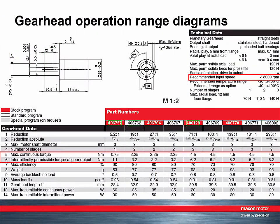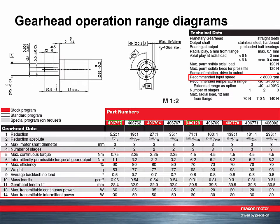Up to this point we've been considering speed and torque limitations of gearheads. However, it's the combined effect of speed and torque — that is, the transmitted power — that is related to service life. The higher the transmitted power, the lower the life expectancy. Therefore, it's reasonable to limit the transmitted power as well.